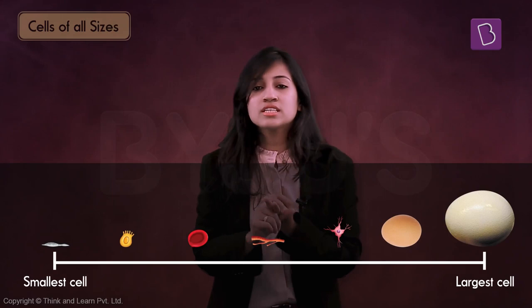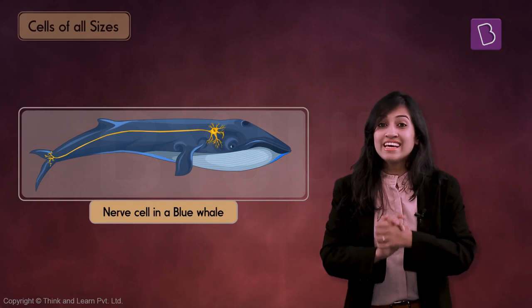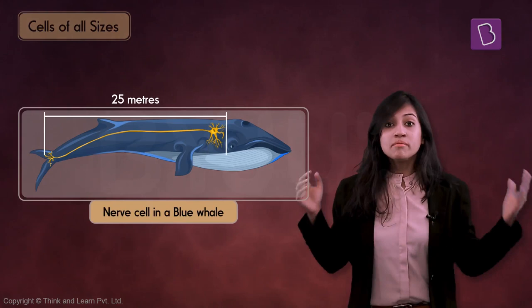This brings me to the next point: cells come in many many shapes and many many sizes. We spoke about two extreme ends on the size of cells, but most living cells actually fall somewhere between these two extremes. We also have a nerve cell in the blue whale that is estimated to be a staggering 25 meters long, making it the longest cell in existence.